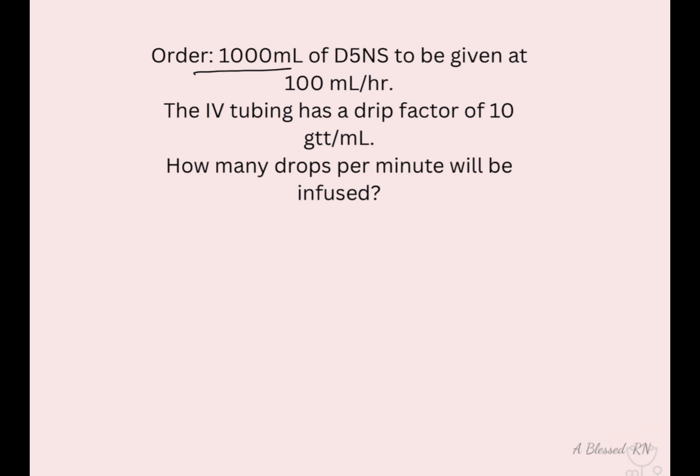Order: 1,000 mL of D5 normal saline to be given at 100 mL per hour. The IV tubing has a drip factor of 10 drops per milliliter. How many drops per minute will be infused?